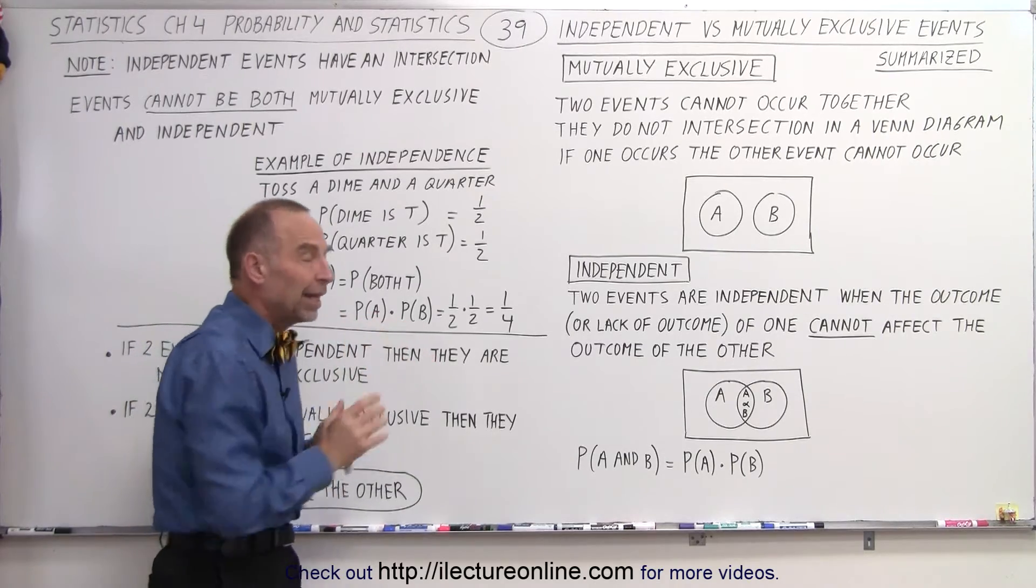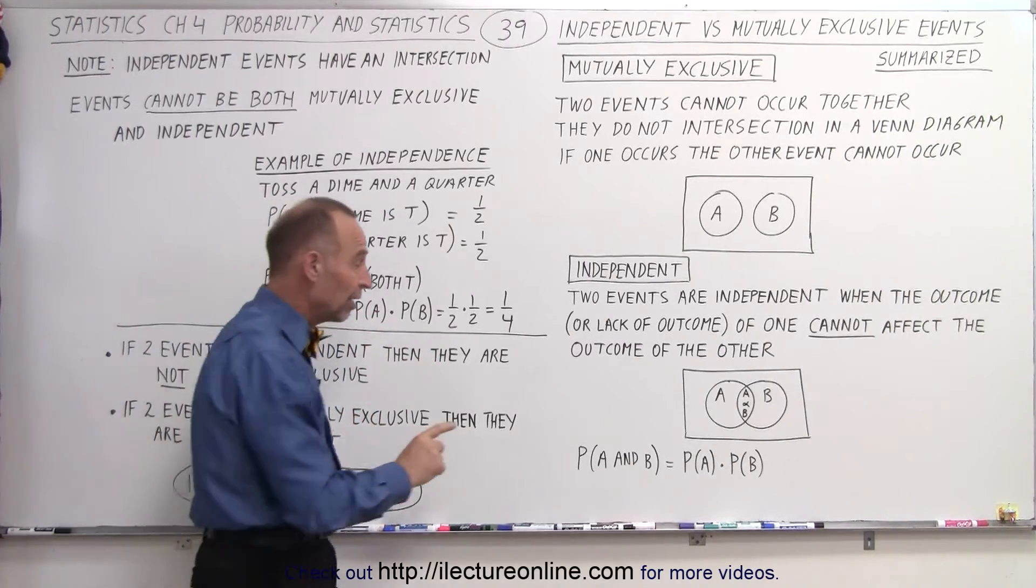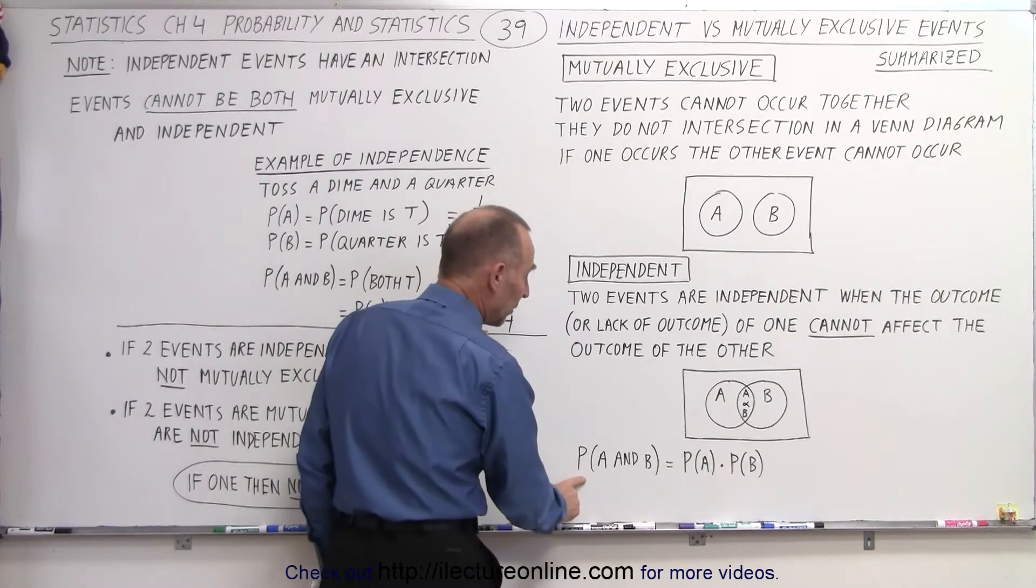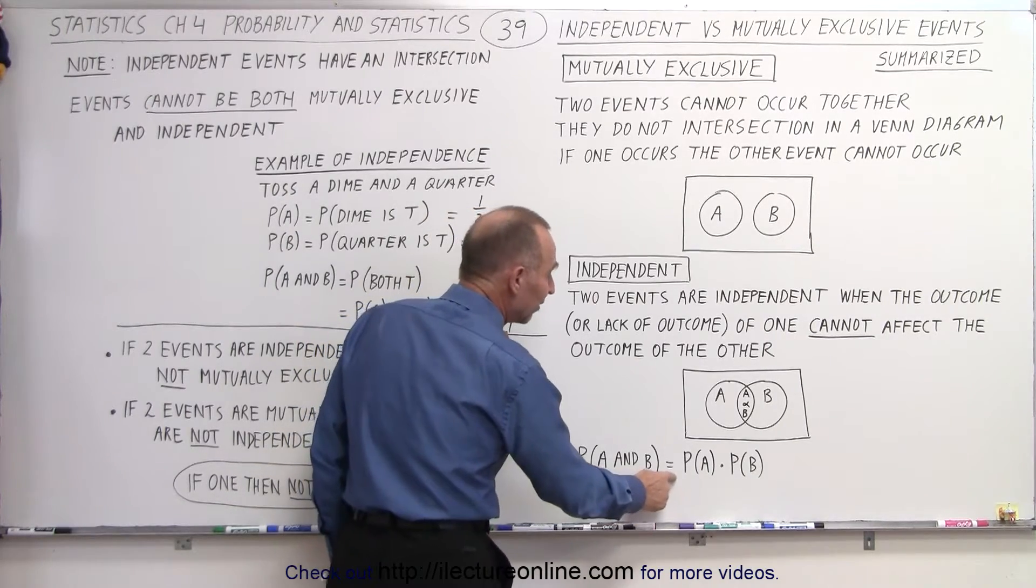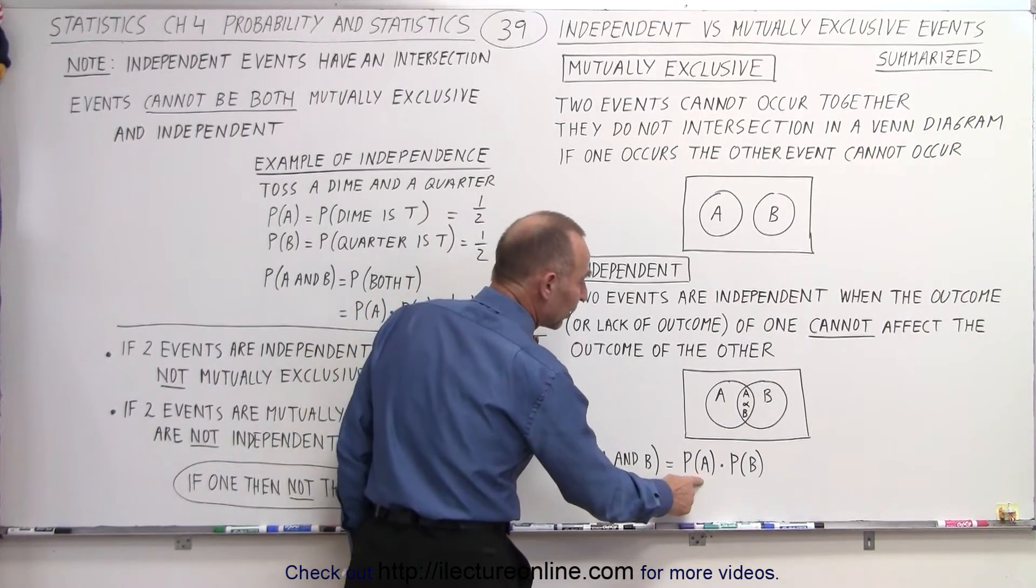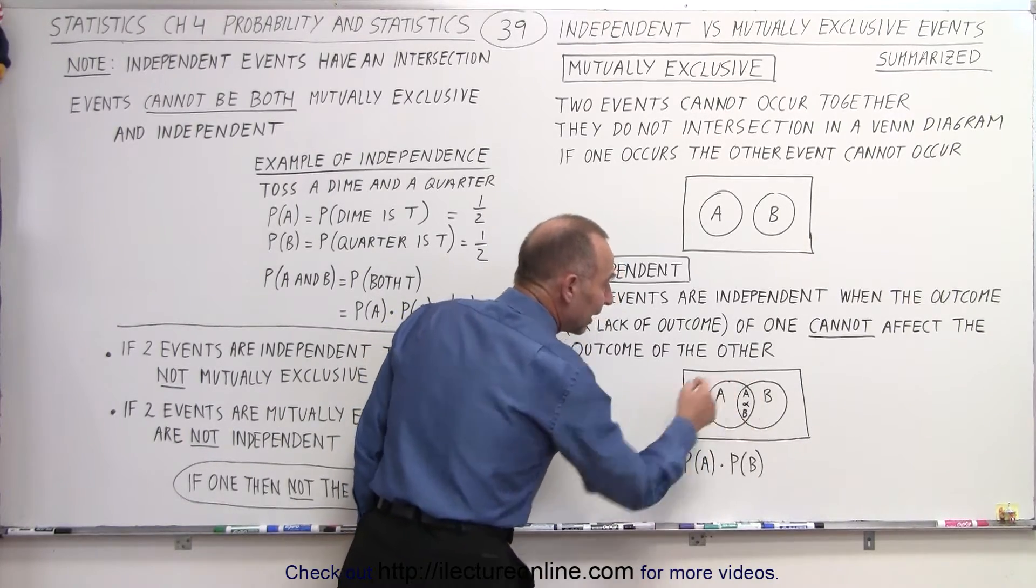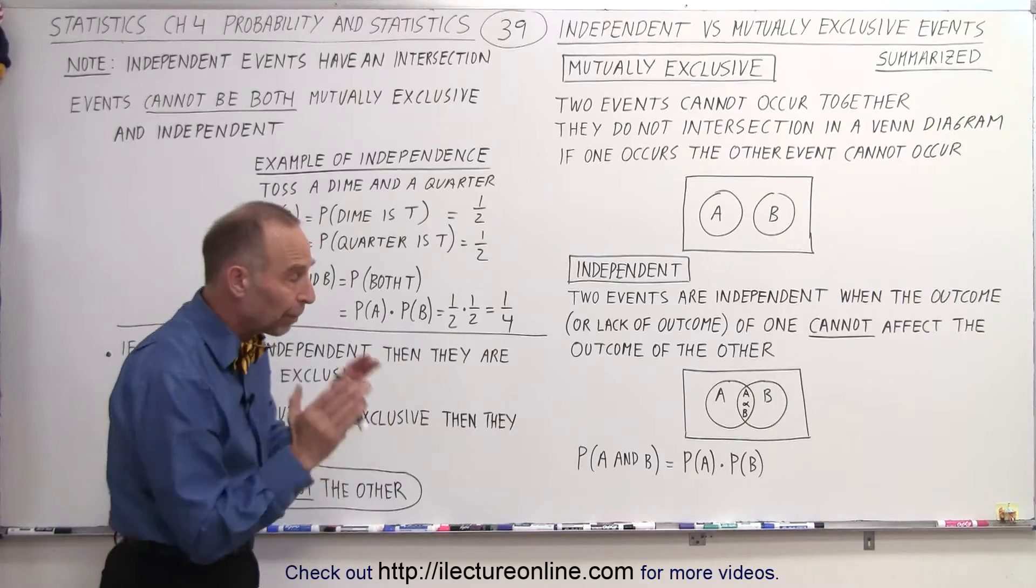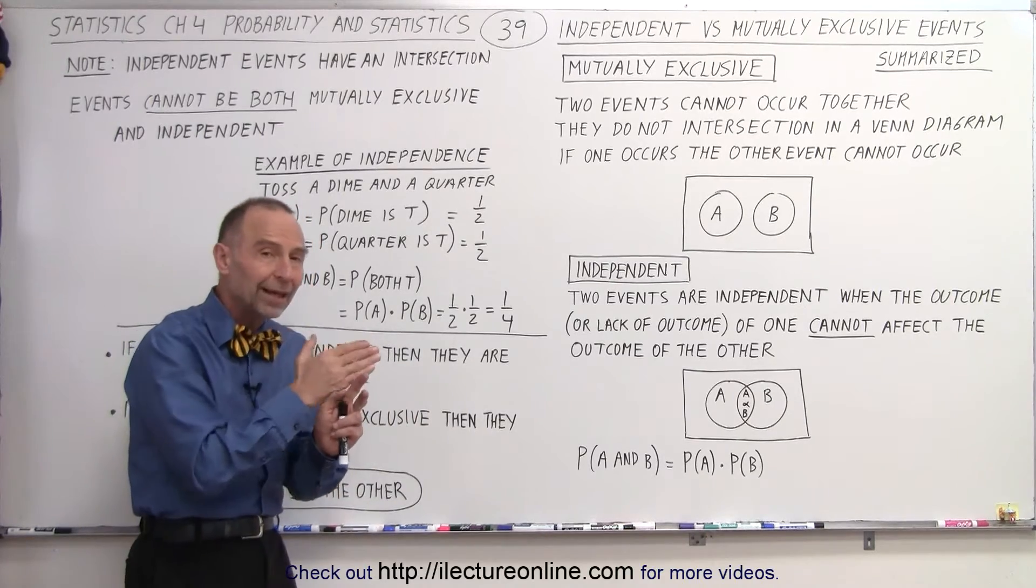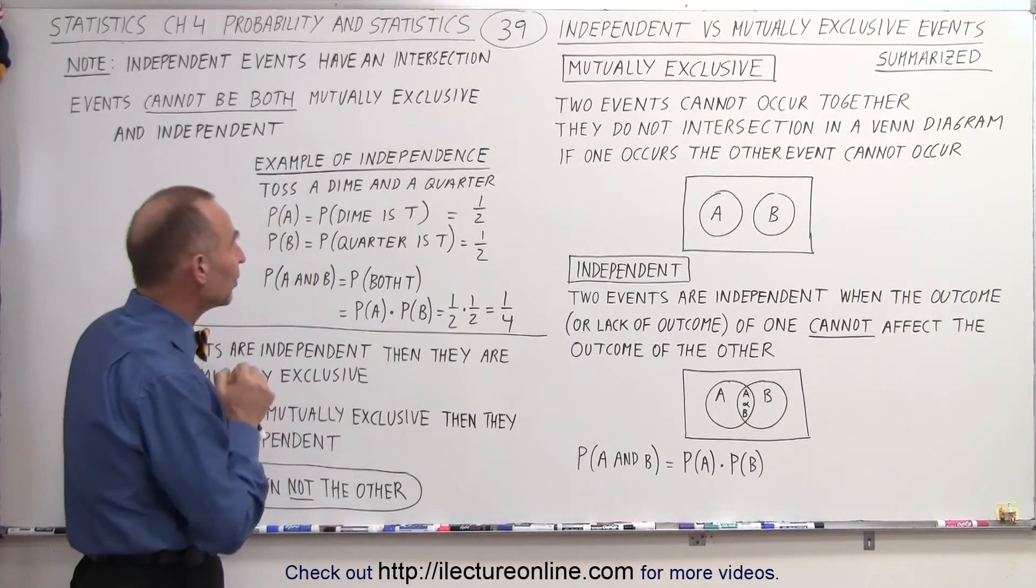That's what makes them independent of one another. And so if you're trying to calculate the probability of A and B, it's simply the product of the probability of A times the probability of B. So the overlap area of A and B is simply the product of the probability of one times the probability of the other.